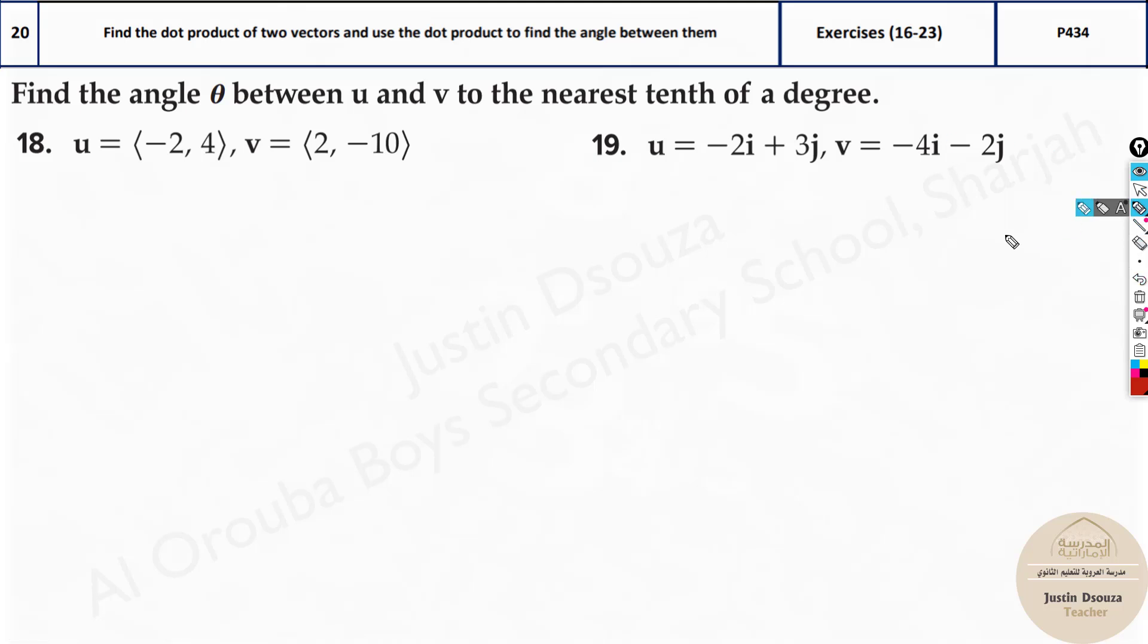I will do this 19th one over here. Same like what we did. But here we don't have the component form, right? How do we write the component form? u component form will be equal to negative 2, 3.